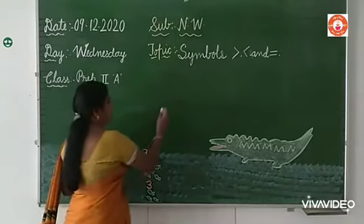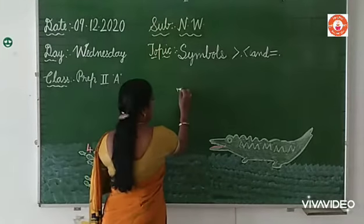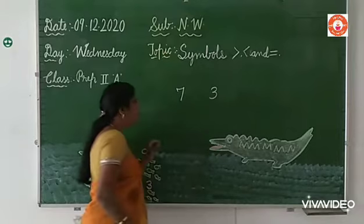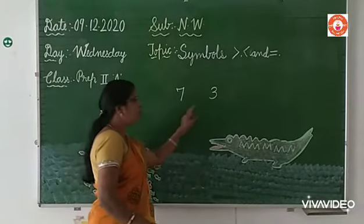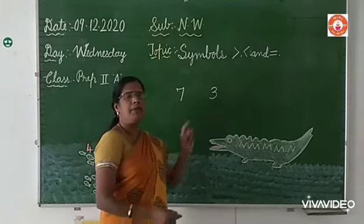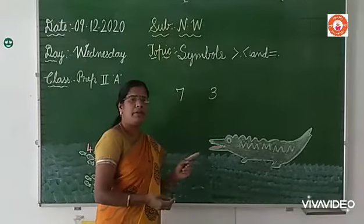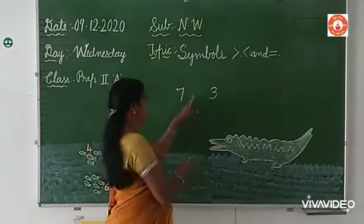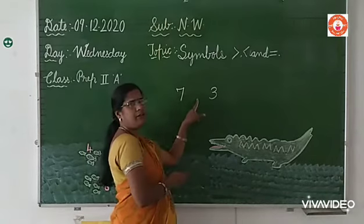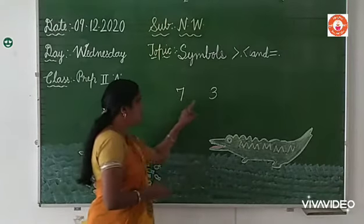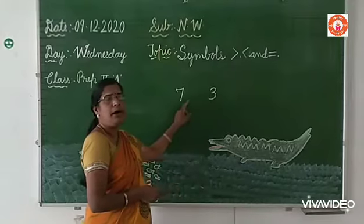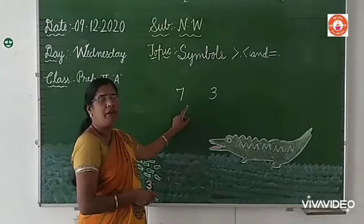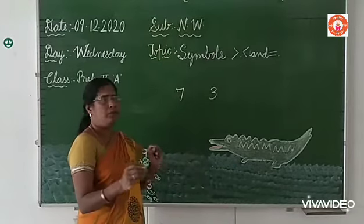Take two numbers: seven and three. Which is the bigger, greater number? Seven. In these two numbers, to identify the greater, we will add a symbol.